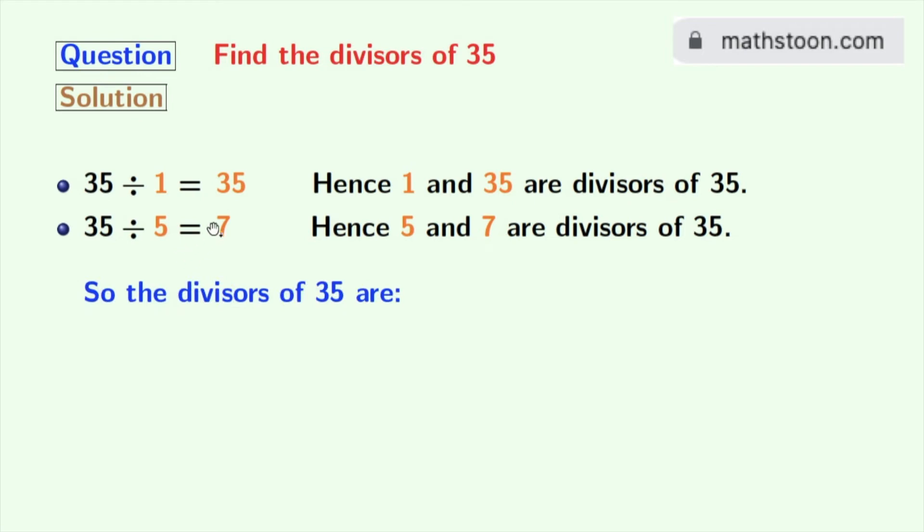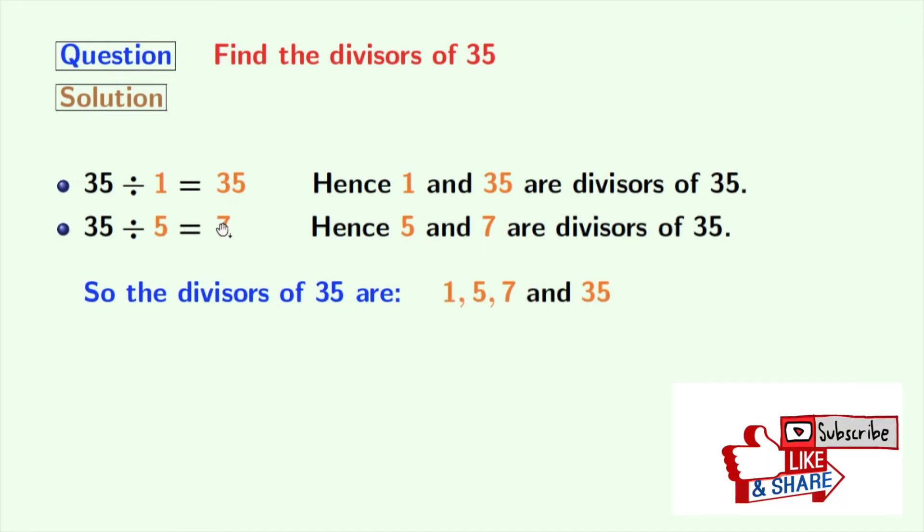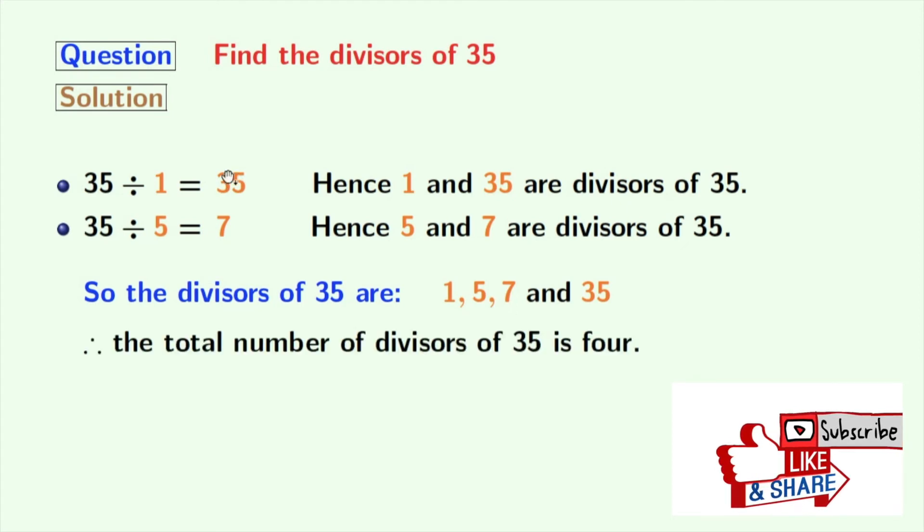Now we have all the divisors of 35 in orange colors. These are 1, 5, 7, and 35. So, the total number of divisors of 35 is 4. Now look at these divisors.